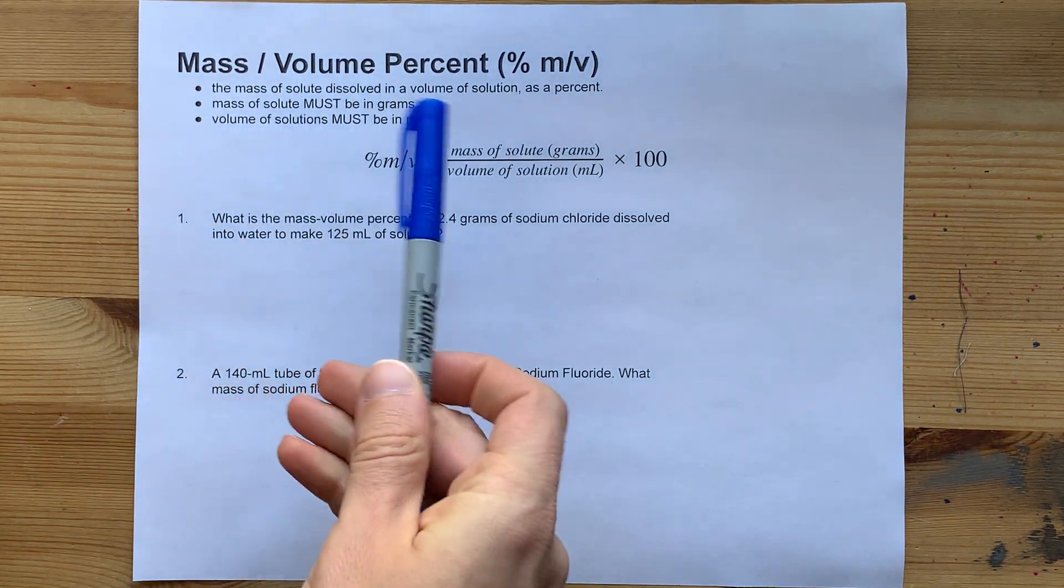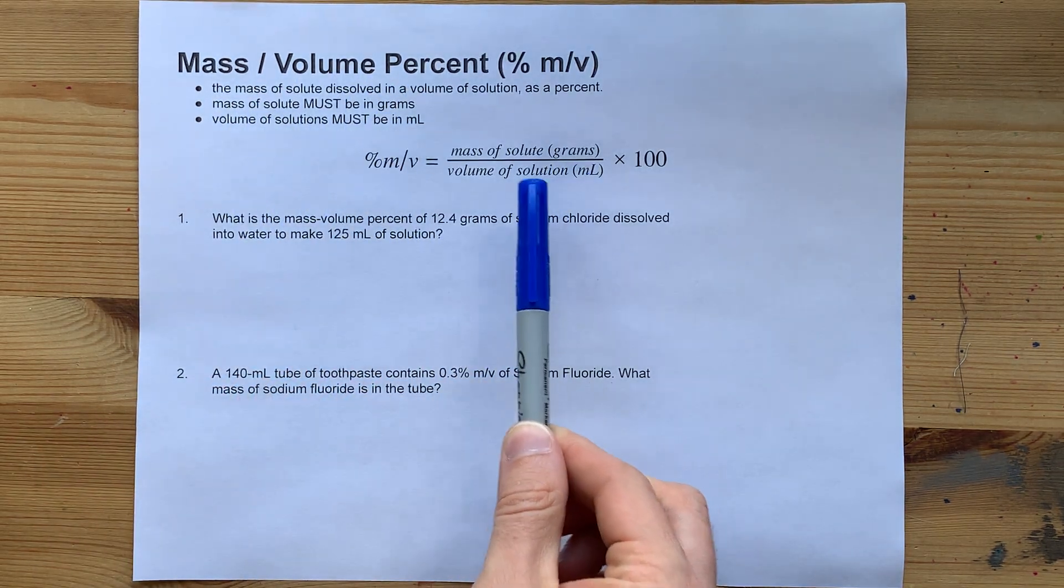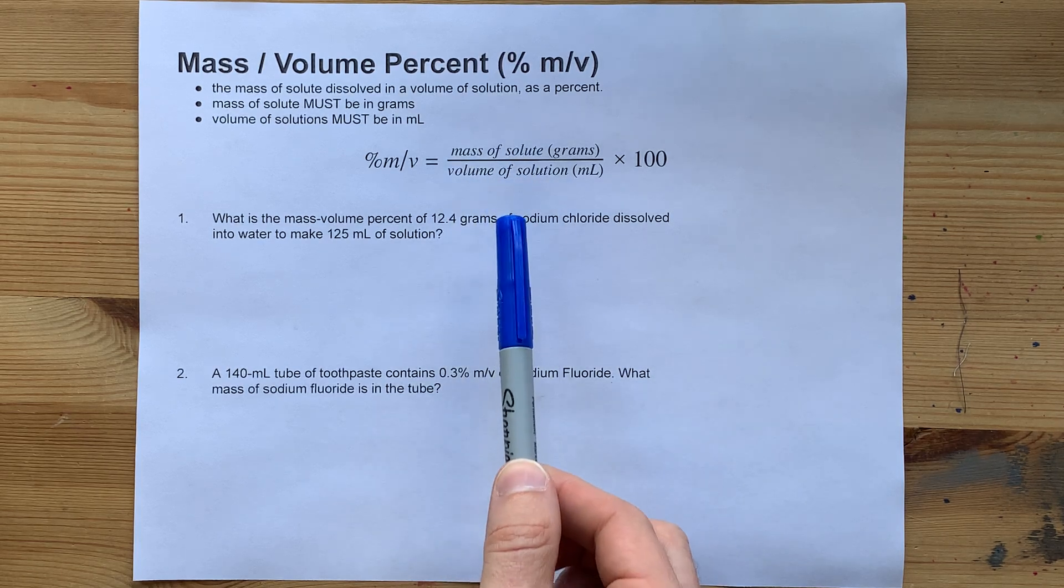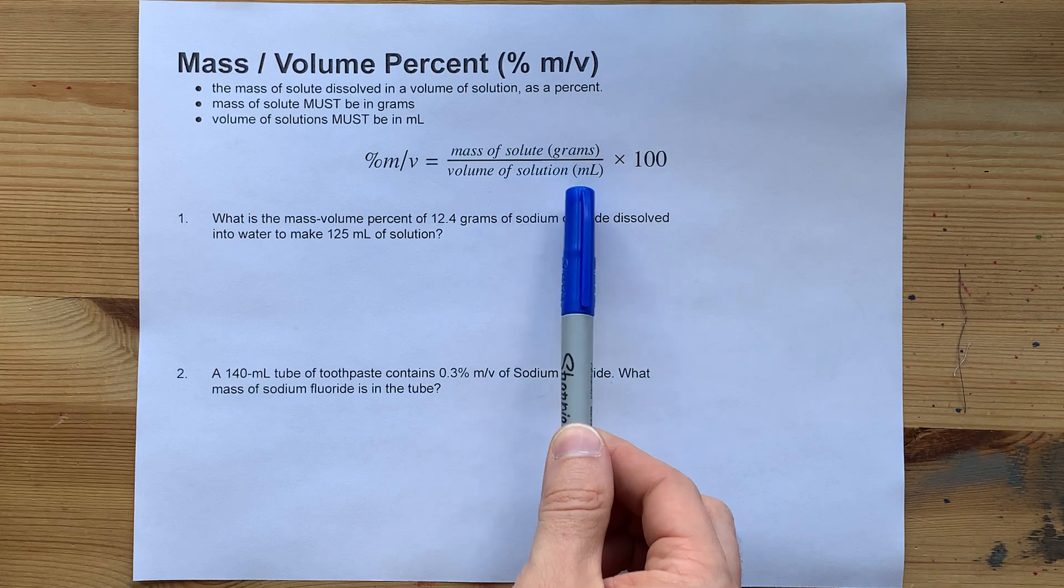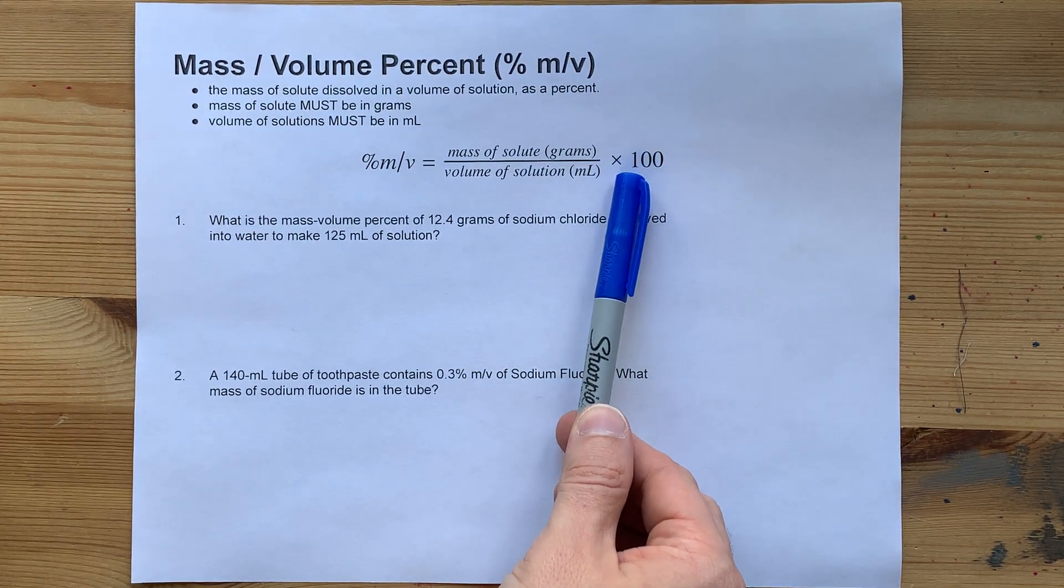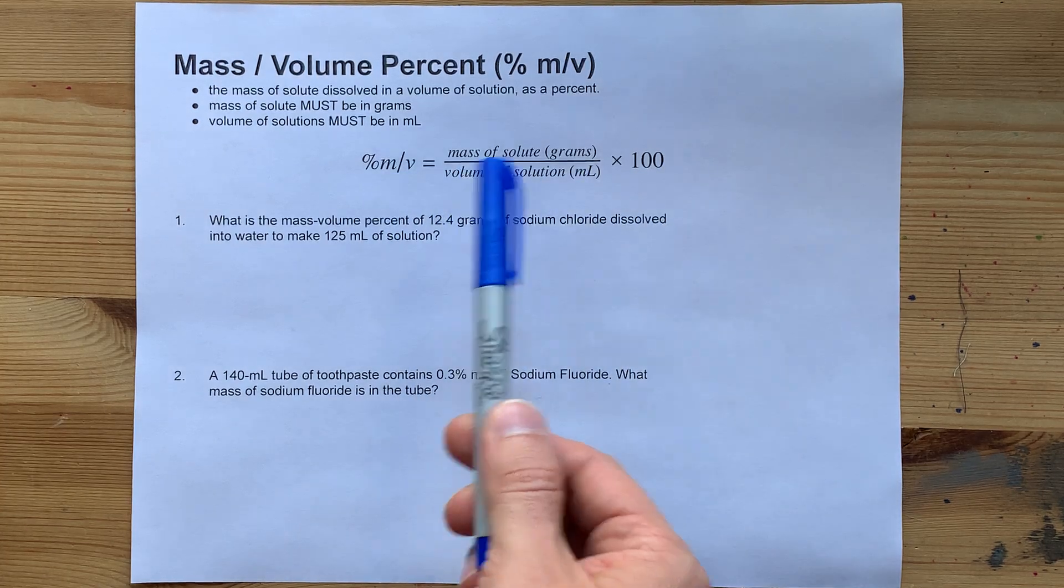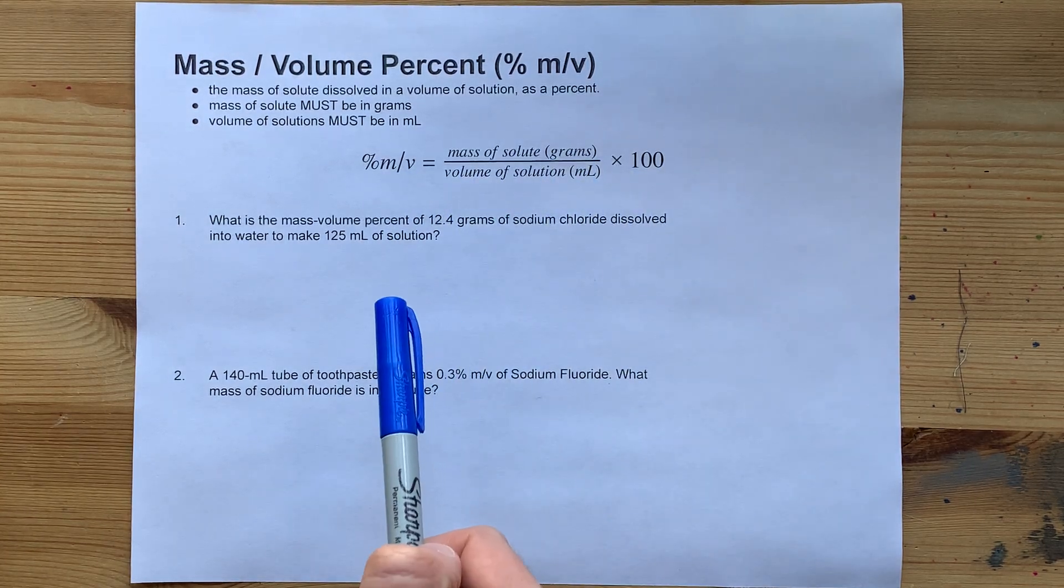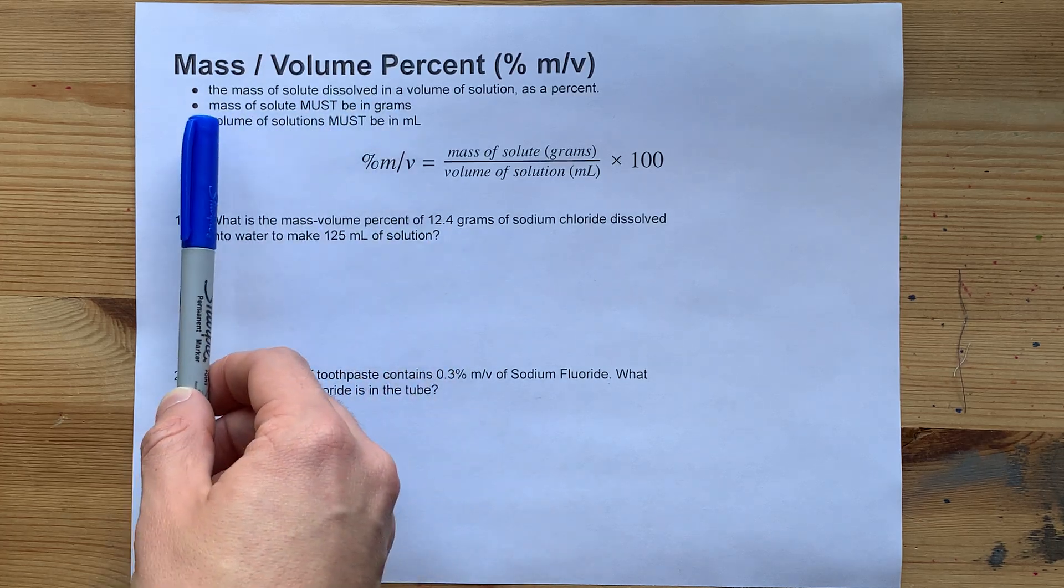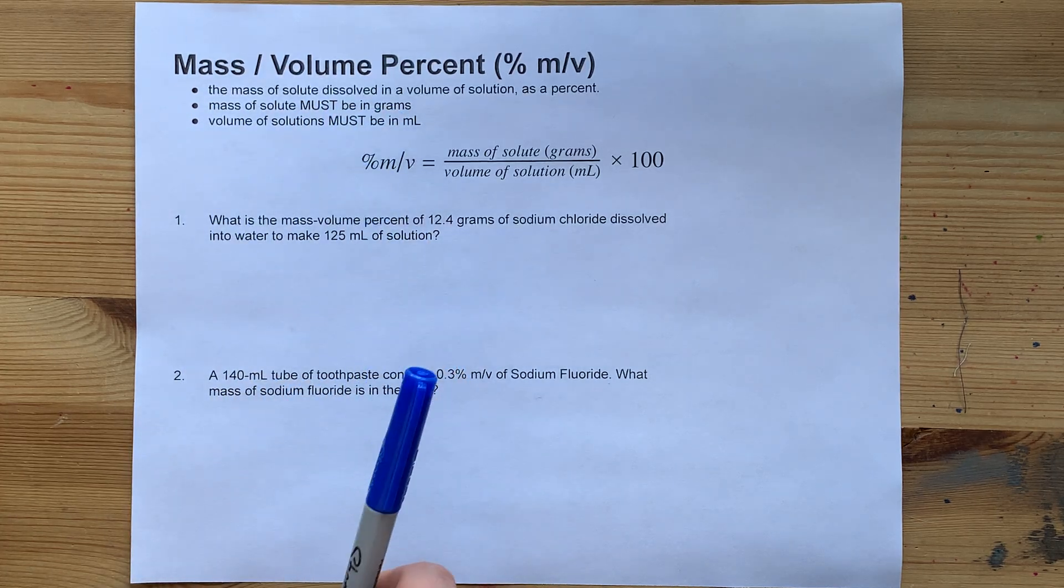Mass volume percent is a measure of how many grams of solute is dissolved in a certain volume of solution. That volume always has to be in milliliters, and because it's expressed as a percent, it's basically how many grams dissolve in 100 milliliters. The notes here are that the mass has to be in grams and the volume has to be in milliliters.